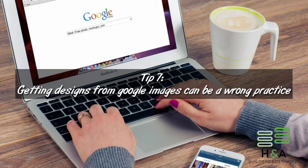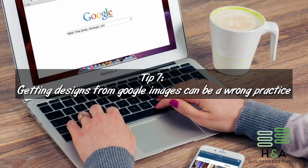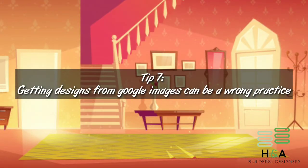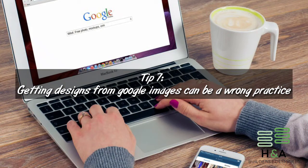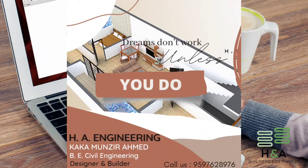Tip number seven: getting designs directly from Google images can be a wrong practice. Most clients download images from Google and adopt the same design, but architects design elevations with respect to the specific building condition, its orientation, and which direction it faces — north, south, east, or west. For example, a south-facing building may need heat-reflecting materials or mesh filters if direct sun heat enters the building. Researching ideas online is good, but following a complete copied design is not. Instead, hire an expert such as an architect or civil engineer for designing the elevation.